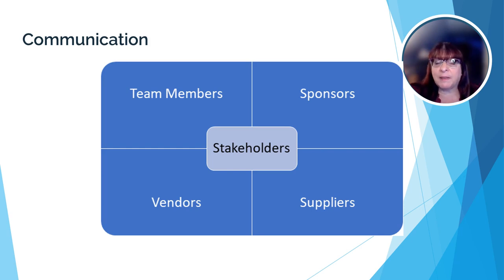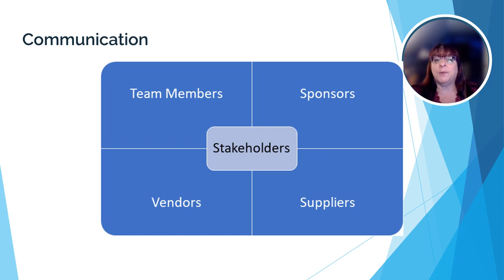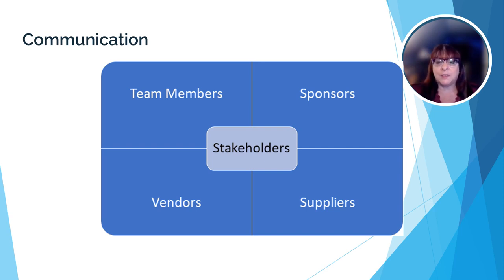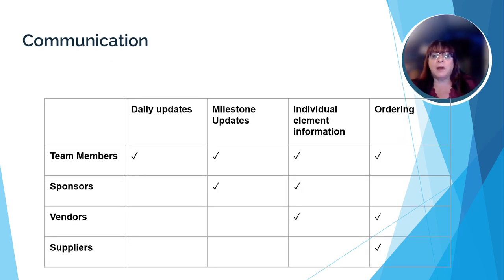We've already talked about the various stakeholders in a project: the team members, sponsors, vendors, and suppliers. Communicating with them is an extremely important part of project management. The right people need to know the right things at the right time. In the planning phase, we devised a plan for communicating with each one of the stakeholders as the project is executed. We may not communicate with each stakeholder in exactly the same way or with exactly the same information. As you can see in this table, not every stakeholder will need to be told everything.